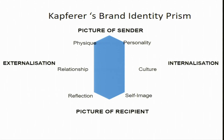Now let us look at the complete picture of the brand identity prism. It can be divided into four parts: picture of sender, picture of recipient, internalization, and externalization. Internalization is what is happening inside our mind, and externalization is what is happening in the marketplace. That duality can be seen everywhere — and it can also be seen in this concept of the brand identity prism.